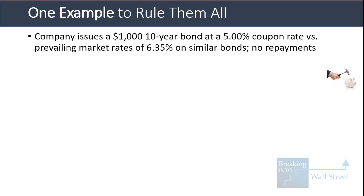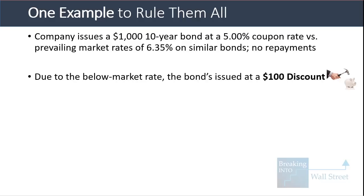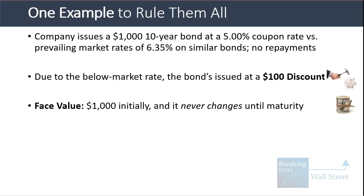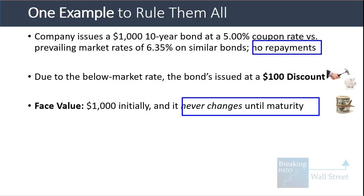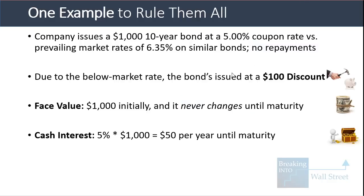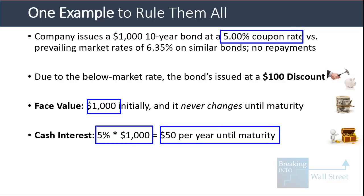Now for one final example to unify all these concepts. A company issues a $1,000 ten-year bond at a 5% coupon rate, while market rates on similar bonds are 6.35%. There are no repayments — just a bullet maturity at the end. Due to the below-market 5% rate versus 6.35%, the bond is issued at a $100 discount, so the company receives only $900 even though it must repay $1,000 and pay interest on $1,000. The cash interest each year is 5% times $1,000 face value, which equals $50 per year until maturity.